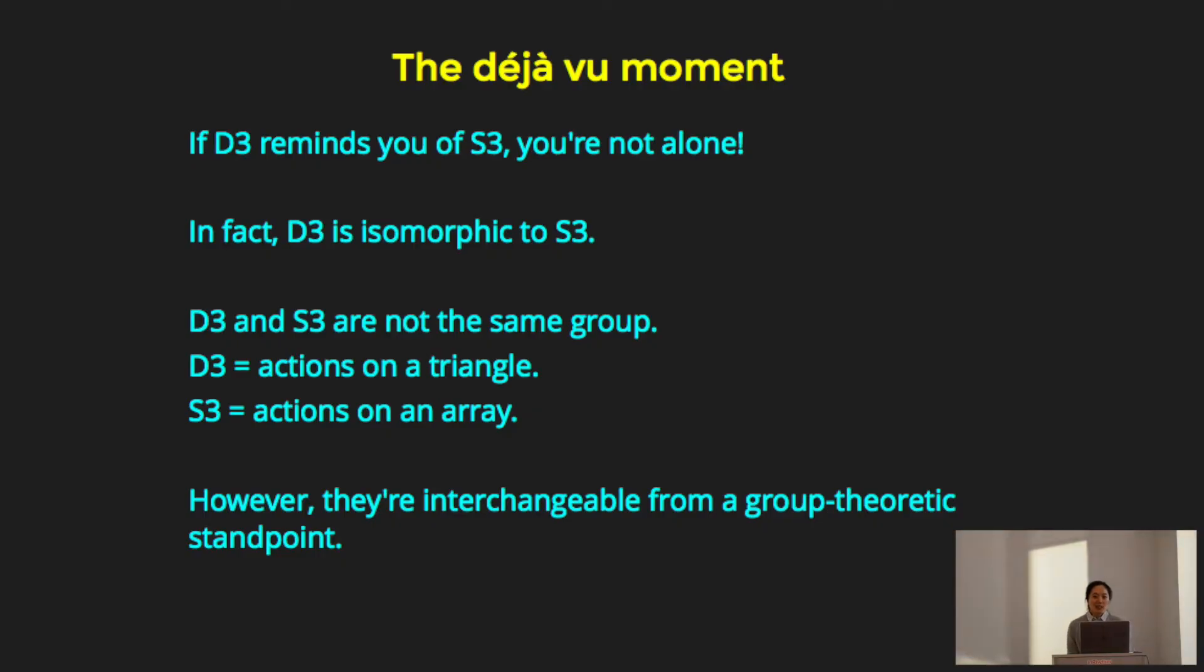So now, many of you might be thinking that these two groups are very similar. And in fact, they are isomorphic to each other. Isomorphic does not mean that they are the same group. D3 consists of actions on a triangle, and S3 consists of actions on an array. However, the two groups are interchangeable from a group-theoretic standpoint, which means that every group-theoretic property that holds true of one group is also true of the other group.